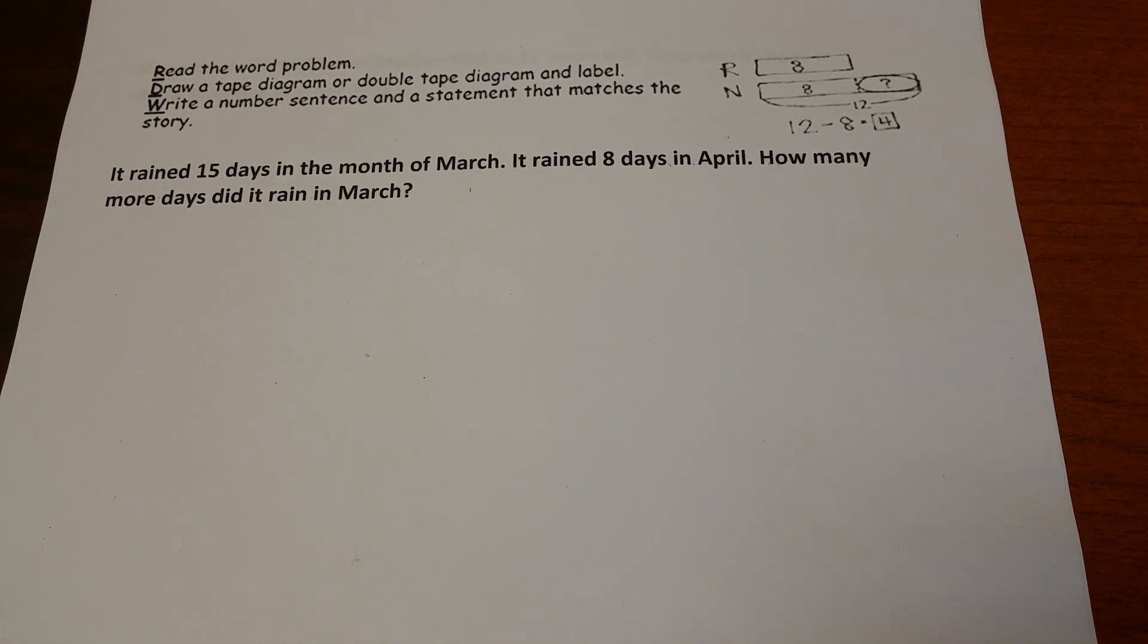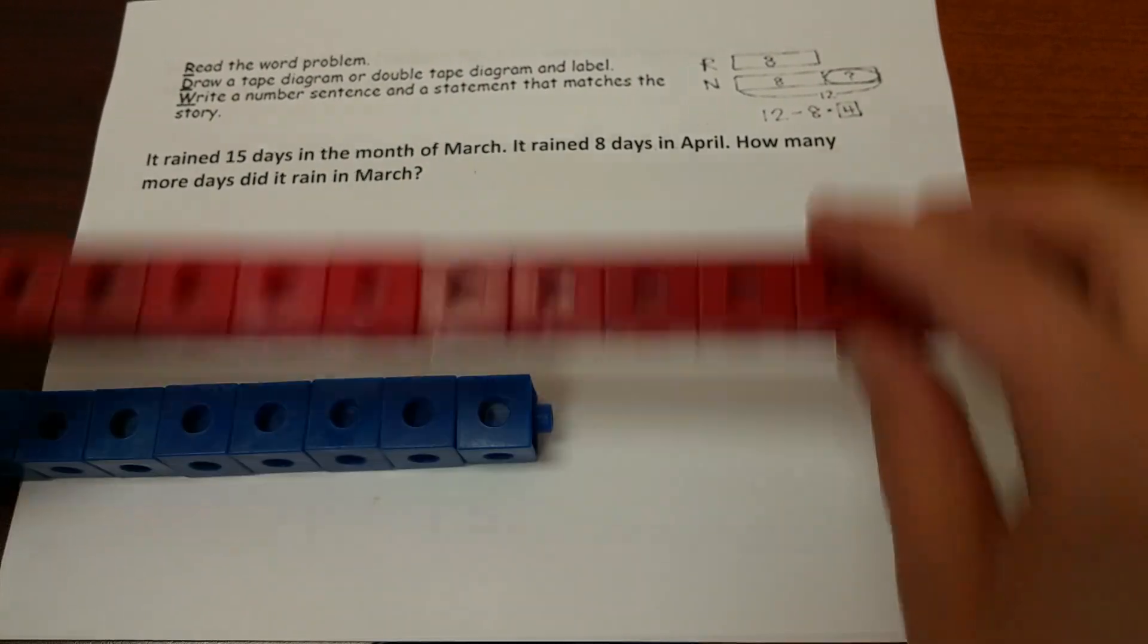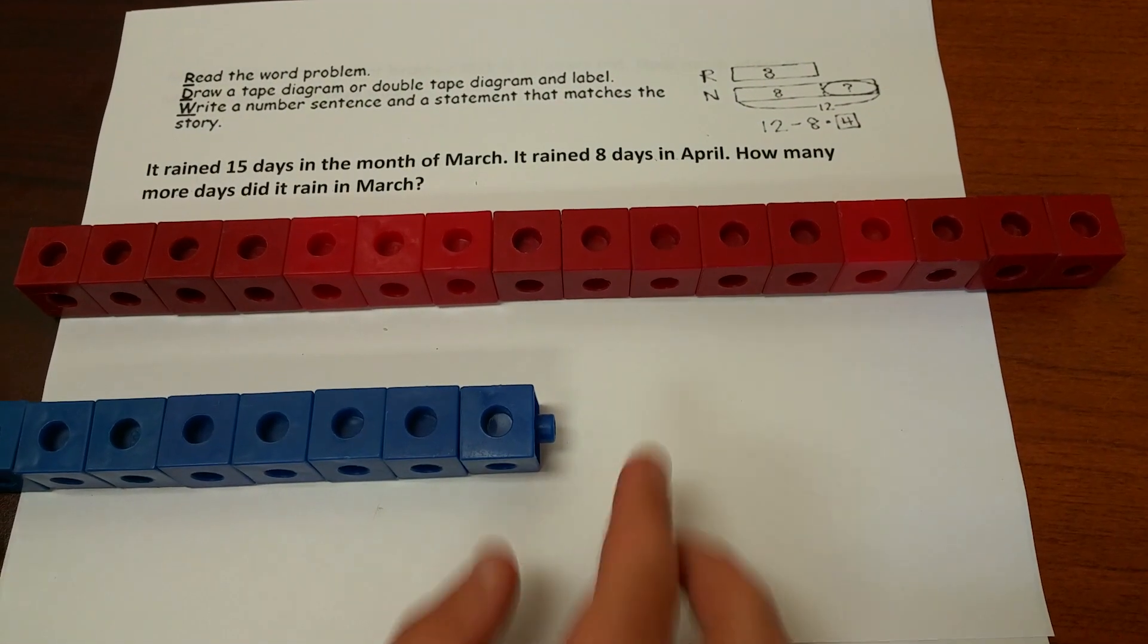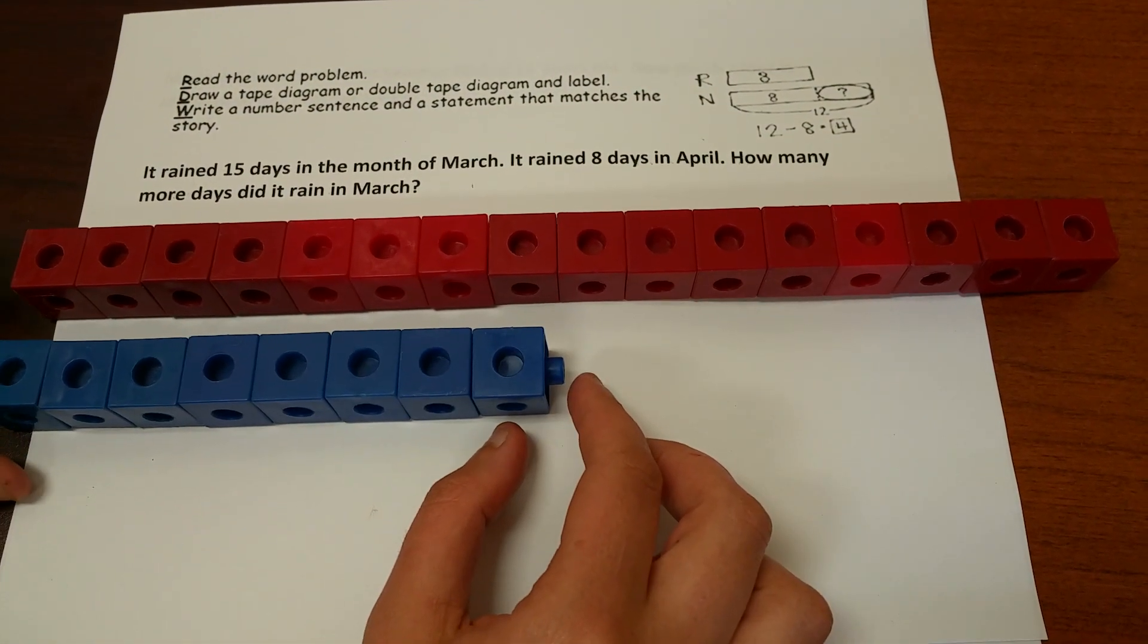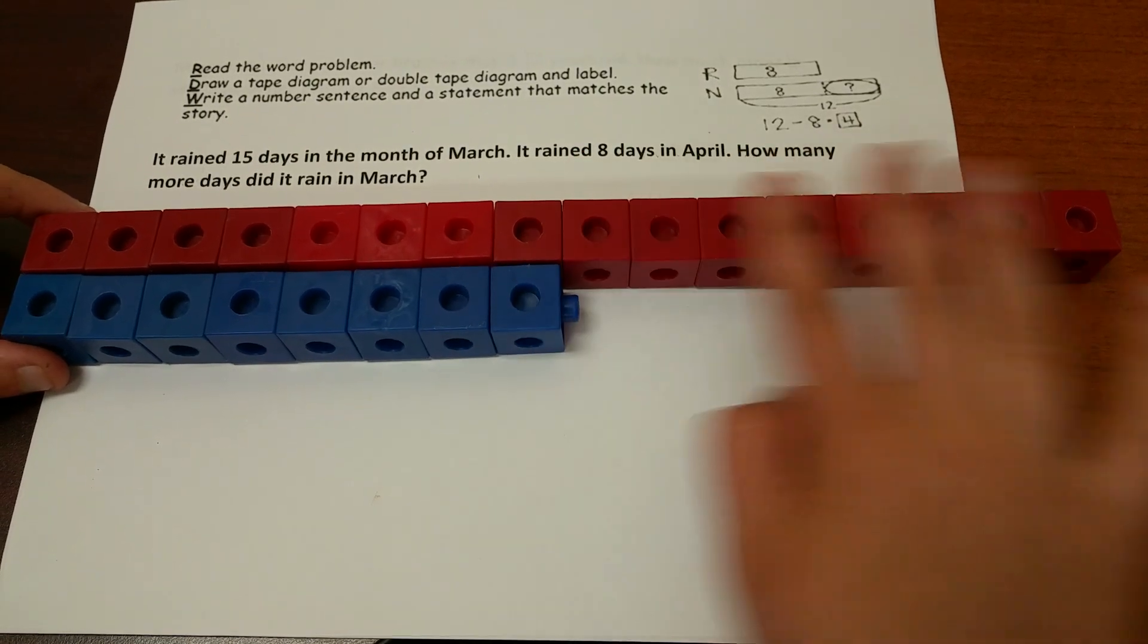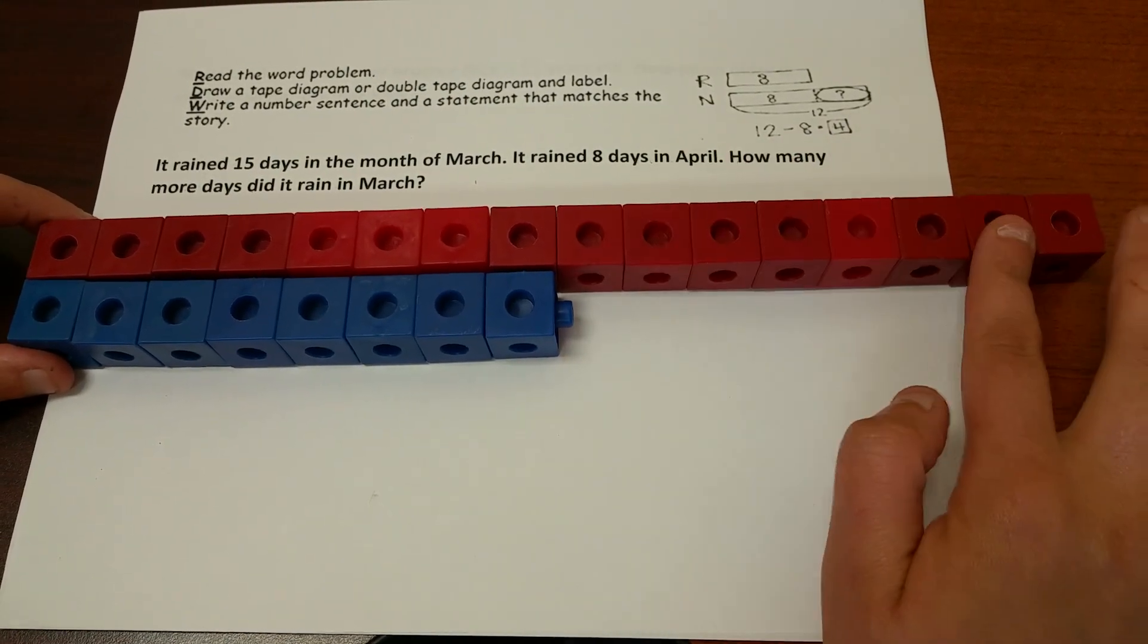We start off comparing using blocks. If it rained 15 days in the month of March, it rained 8 days in April, how many more did it rain in March? Lining them up so you can see how many more and counting on.